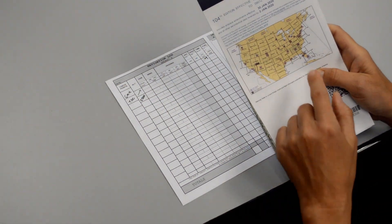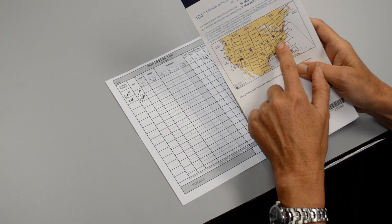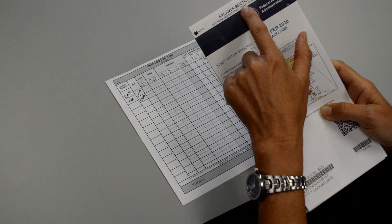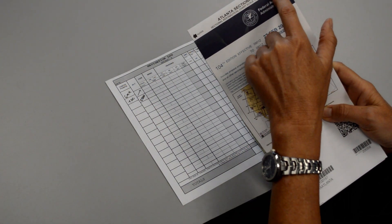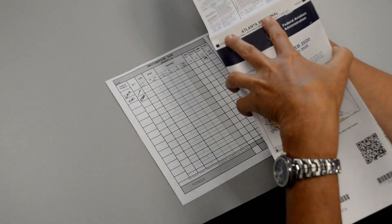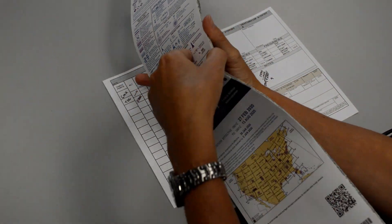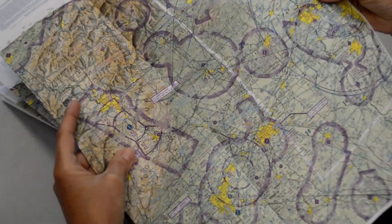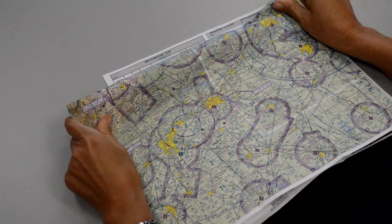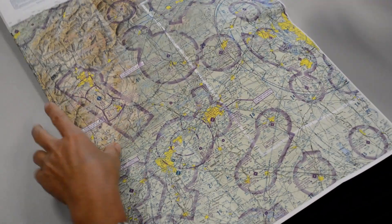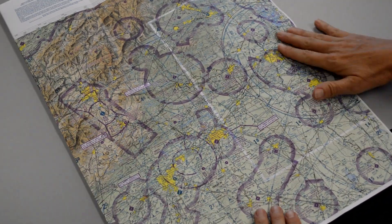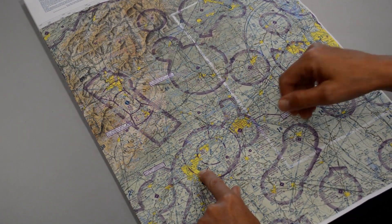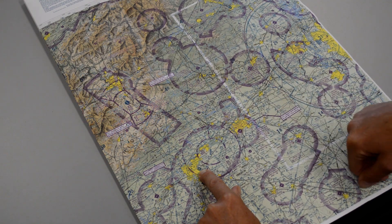We're using the Atlanta sectional and we are located in the northeastern portion of the Atlanta sectional. So open your chart the right way the first time. This is to the south and this is to the north. So we want to open it the north all the way to the east side and then we can quickly find our airport. We have Charlotte and then we have Greer and then our airport right here. And this is our pencil mark that we drew earlier.